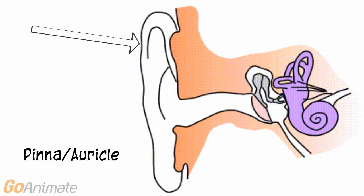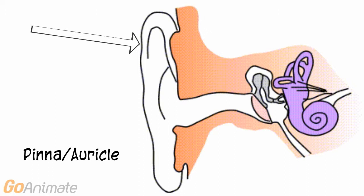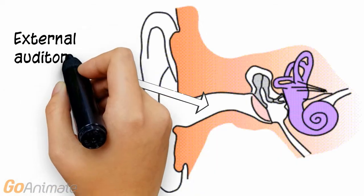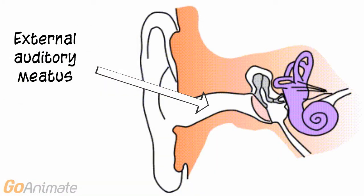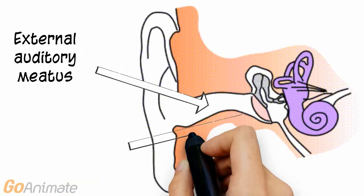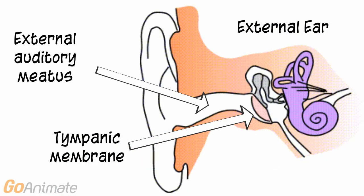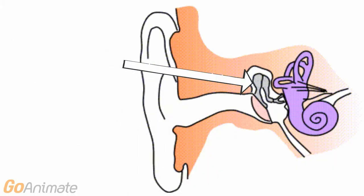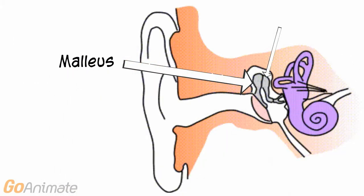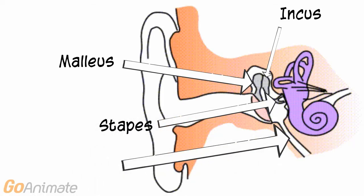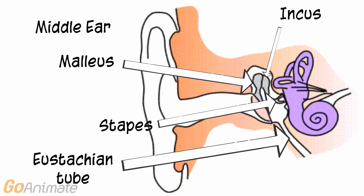The ear consists of three main divisions. The external or outer ear includes the pinna or auricle and the external auditory meatus. The tympanic membrane is considered the boundary between the external and middle ear. The middle ear consists of the auditory ossicles, which include the malleus, incus, and stapes, and the Eustachian tube that helps to equalize pressure inside of the ear.